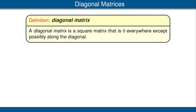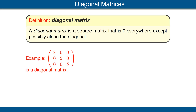A diagonal matrix is a square matrix that is zero everywhere, except possibly along the diagonal. For example, the matrix shown here is a diagonal matrix. Clearly, every diagonal matrix is also an upper triangular matrix, but the converse is not true. An upper triangular matrix is not necessarily a diagonal matrix.